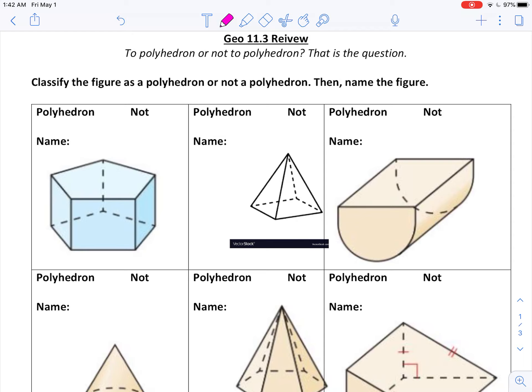But first thing we want to do is classify as polyhedron or not a polyhedron. Then we are going to name the figure if it is a polyhedron. So what we are looking for is straight flat sides. We don't want any curved sides that would make it not a polyhedron.